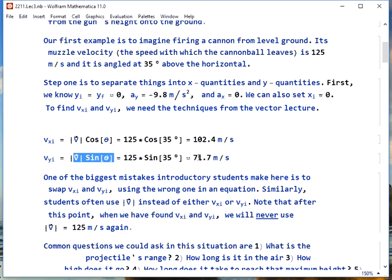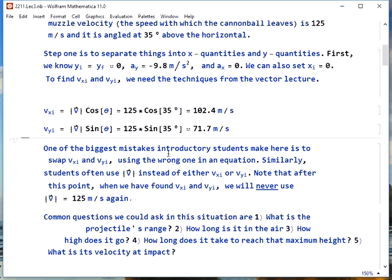Notice as a check to make sure nothing has gone wrong, if your angle is less than 45 degrees, your X velocity should be larger than your Y velocity. One of the most common problems people have on a test is they will end up mixing up X and Y. They'll plug the wrong thing into an equation.